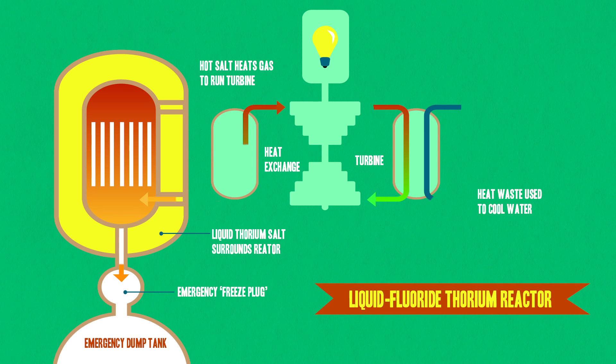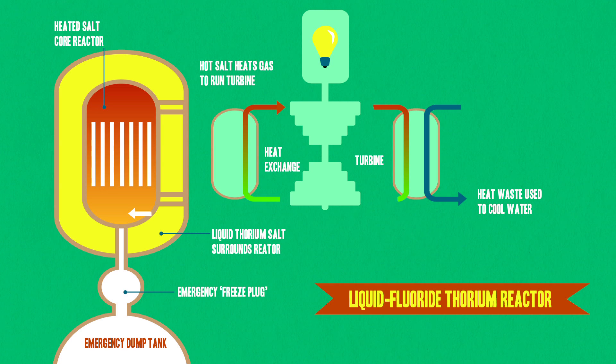LFTR uses a mixture of liquid salts to cool the reactor and to transfer the heat energy out of the fission chambers into something that can then power a turbine. Proponents say that such a system would be more efficient and safer than the pressurized water used to cool uranium fuel rods now and the boiling water and steam used to transfer the energy they create.